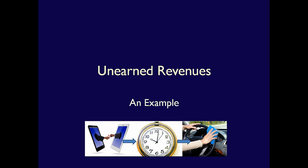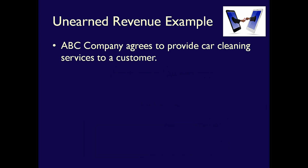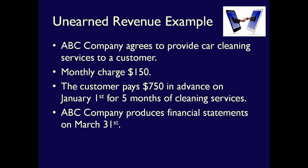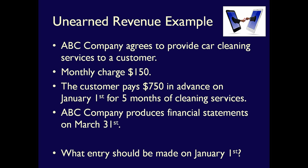Let's do an example so you really understand the entries that impact the accounting equation when we're doing an unearned revenue entry. ABC Company agrees to provide car cleaning services to a customer for $150 per month. The customer pays for five months in advance — five times $150 means they give ABC Company $750 cash on January 1st. ABC has to report to the public quarterly, meaning they produce financial statements on March 31st. Let's look at January 1st and see what entry ABC Company needs to make.